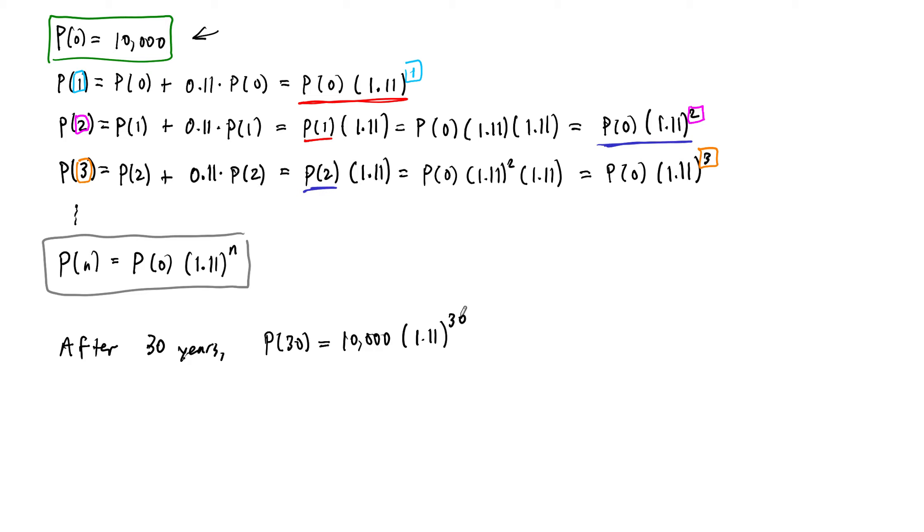So we had $10,000 we put in the bank. We left it for 30 years, and I'm going to a calculator now. You can't see it, but we're going to end up having quite a bit of money here. So we end up with $228,922.97. And so I've rounded that to the nearest cent. I rounded up, actually.